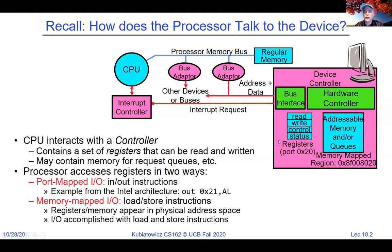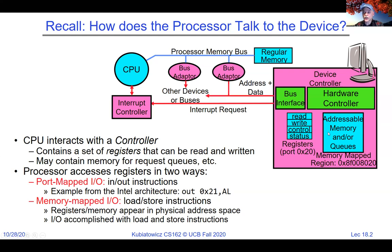As we were getting toward the end of the lecture last time, we were talking about a couple of different ways the CPU can communicate with a device. One was via special instructions — things like IN_B and OUT_B, or IN_W and OUT_W for byte or word. Those special port I/O instructions go to a special port address space, which is different from the regular address space. Mostly with Intel processors, this is a backward compatibility thing from the original IBM PCs. Ports like 0x20, 0x21, 0x22, 0x23 represent registers inside the device controller that can control the device.